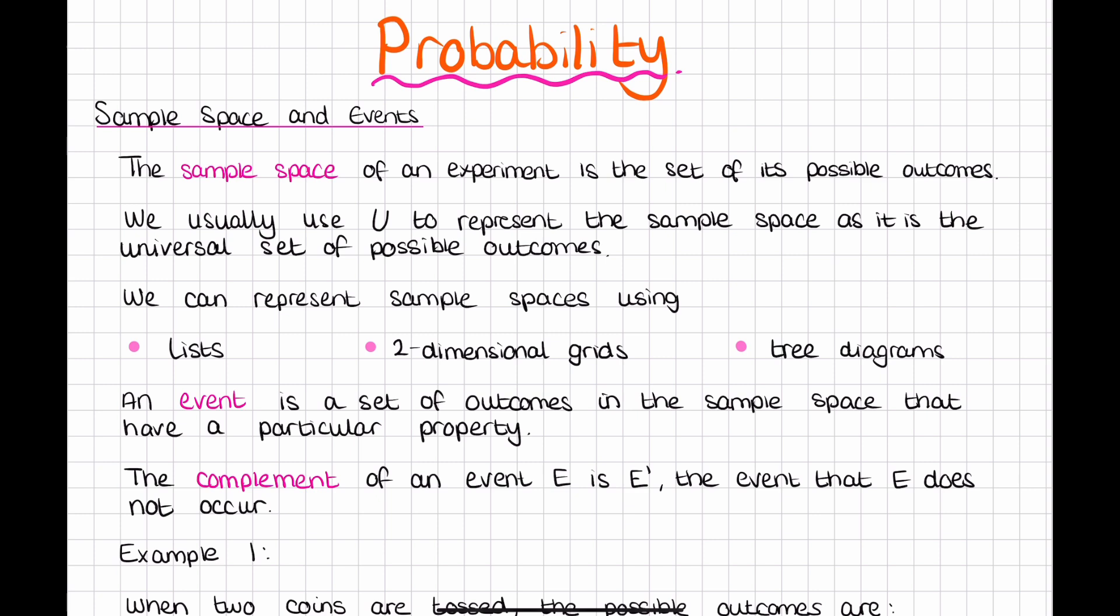We usually use a capital U to represent the sample space and we call this a universal set of possible outcomes. When representing a sample space we can use different tools. The three we're going to look at are lists, two-dimensional grids, and tree diagrams.